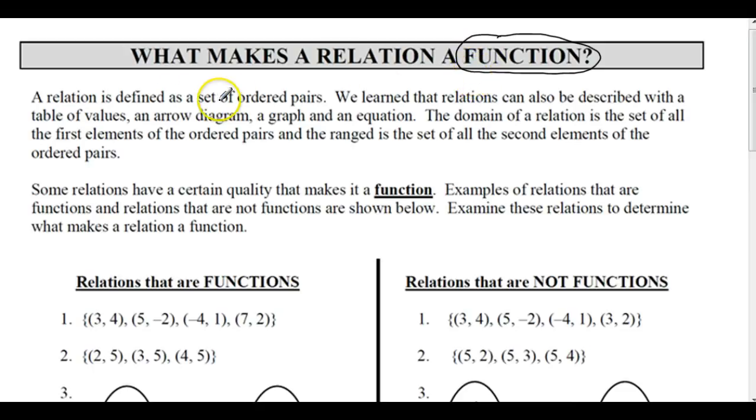So we know that a relation can be defined as a set of ordered pairs. We learn that relations can be described with a table of values, an arrow diagram, a graph,